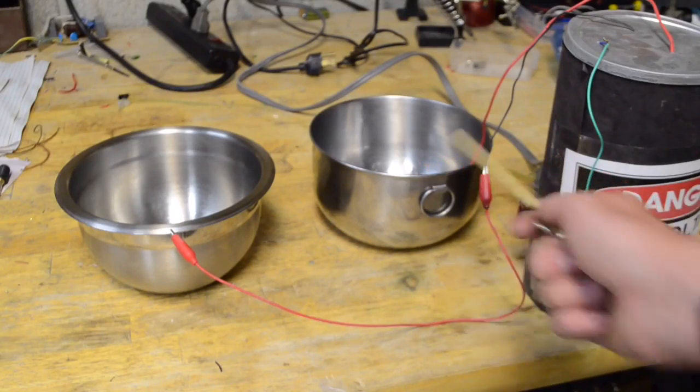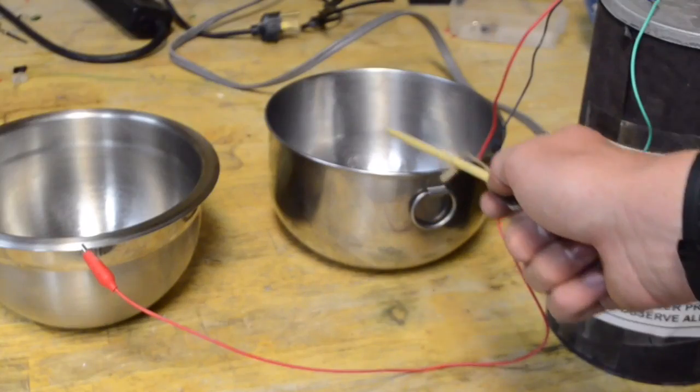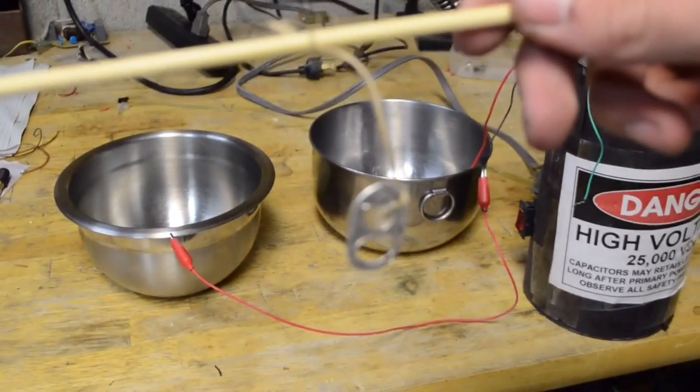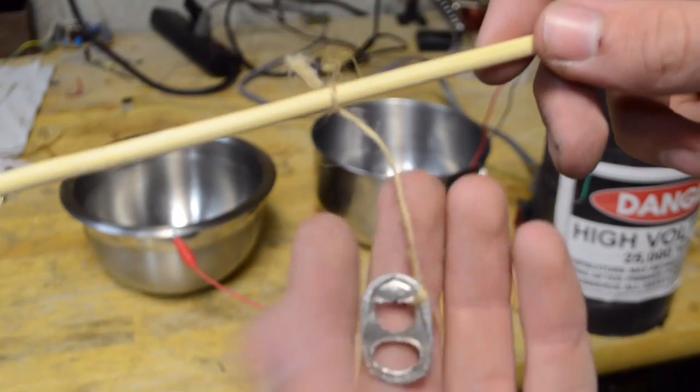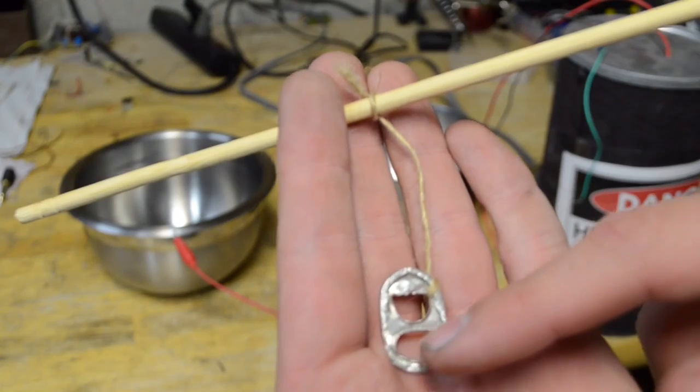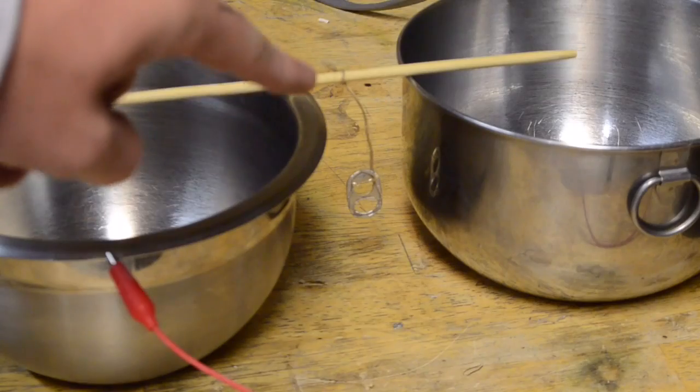So basically I have one end of this DC high voltage power supply attached to this metal bowl. And the other end is attached to this other metal bowl. Hanging between them I have this soda can lid. As you can see it's attached to this string on this wooden stick. Basically this will act like the metal ball I was showing before in between those two bells. Now watch as I turn it on.